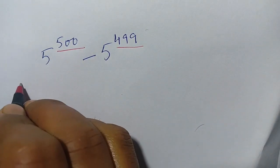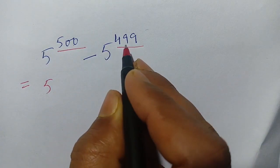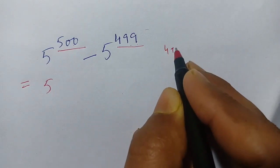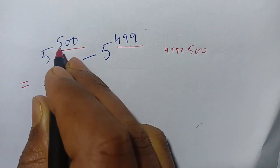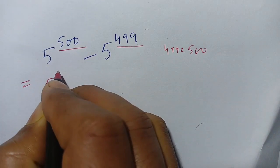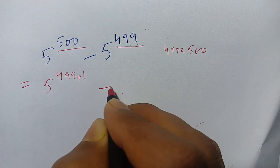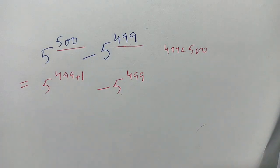We have to solve this. 5 power 500 can be written in terms of 499 because 499 is less than 500. Thus, 5 power 500 can be written as 499 plus 1 minus 5 power 499.